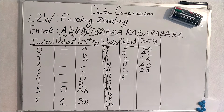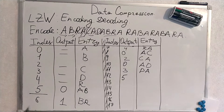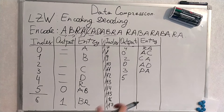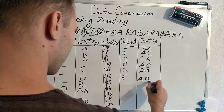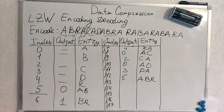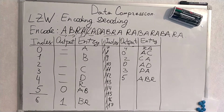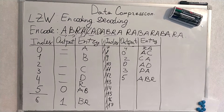Something interesting is coming here. AB has already been encoded. Thus we use the index of AB and concatenate the next symbol R. I highly recommend you to continue encoding this sequence yourself, and I will give the final result now.